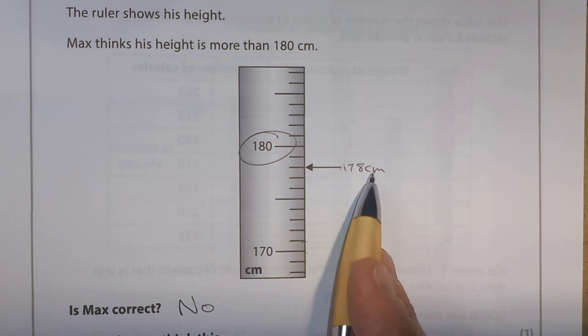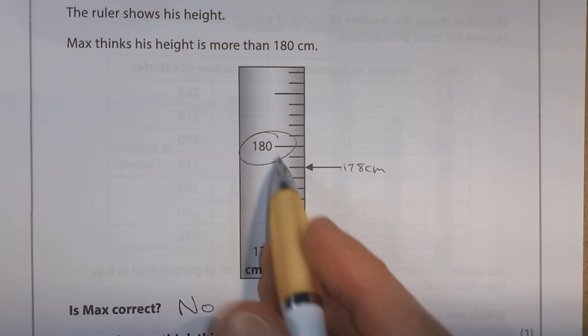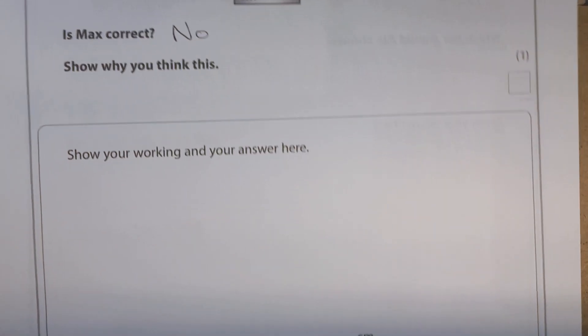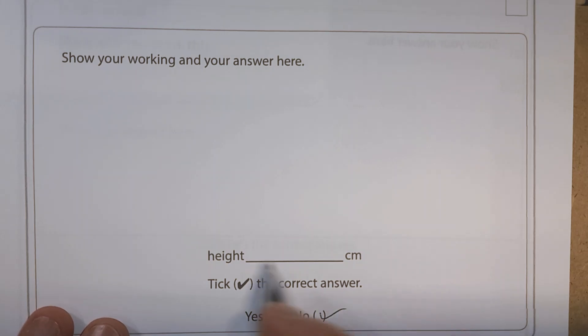And we're also saying exactly how high it is. Okay. But we don't need to say that. We can just say no because the arrow is below 180. And then we just want to make sure we tick no. In fact, you do have to put a height in here. So we would put 178.